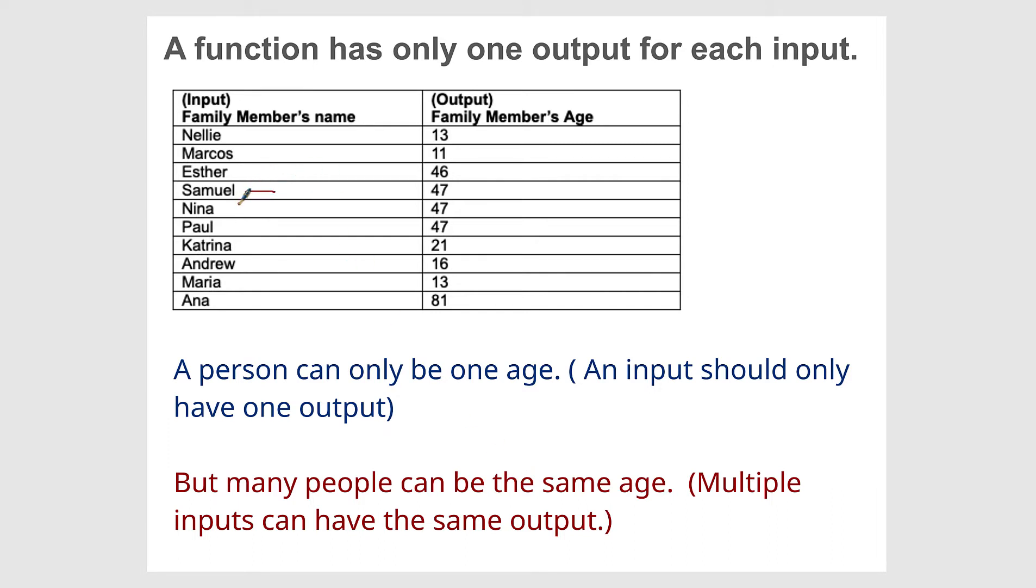If you look here at Sam, Nina, and Paul, they are all 47. That is okay. Many people can be the same age, but you can't have one person be many ages, right? That doesn't make sense.